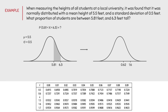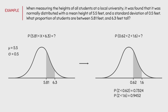According to the standard normal table, the z-score of 0.62 corresponds to an area of 0.7324, and the z-score of 1.6 corresponds to an area of 0.9452. To find the proportion of values between 0.62 and 1.6, we subtract the smaller area from the bigger area: 0.9452 minus 0.7324 gives us 0.2128. As a result, the proportion of students between 5.81 feet and 6.3 feet tall is 0.2128.